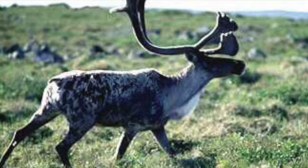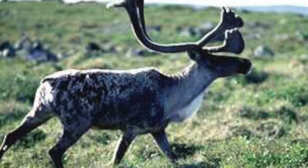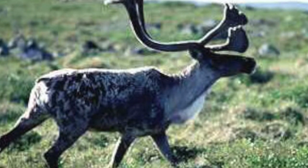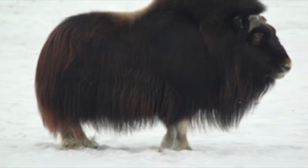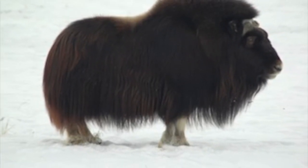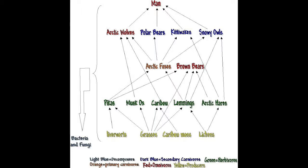Mammals such as pikas, marmots, mountain goats, sheep and elk. These animals are adapted to handle long, hard and cold winters and to breed and raise young quickly in the summer. Mammals and birds have additional insulation and form fat to keep them warm. Many animals hibernate during the winter because food is not abundant. No reptiles or amphibians live in the tundra because of the cold temperatures.